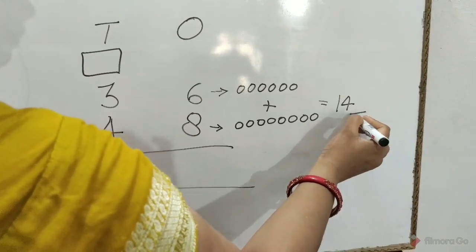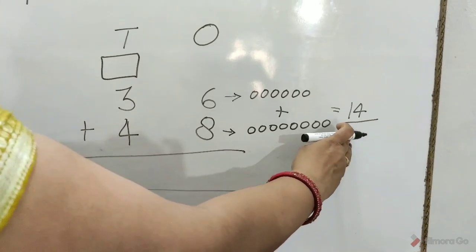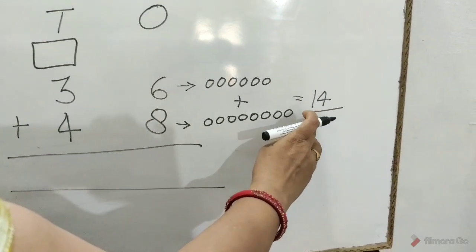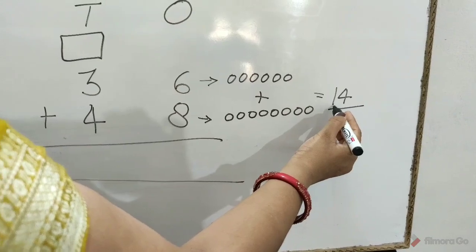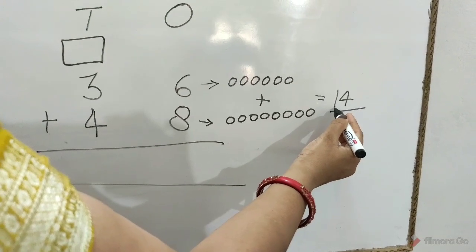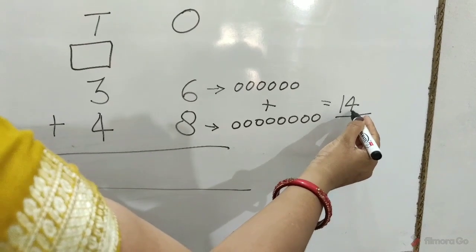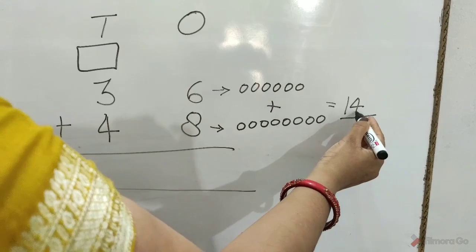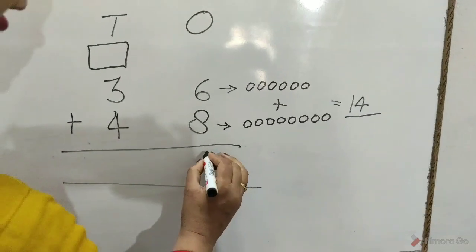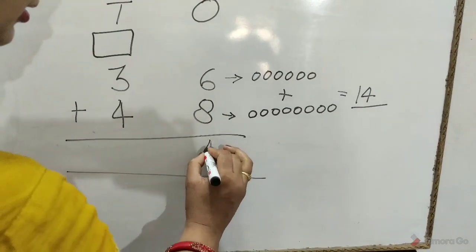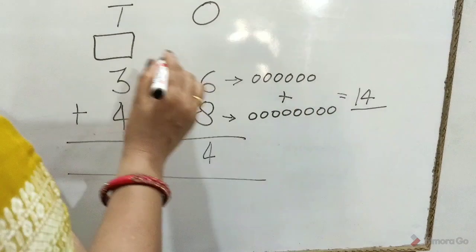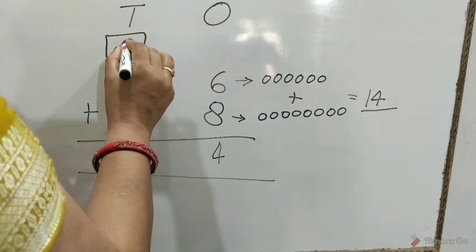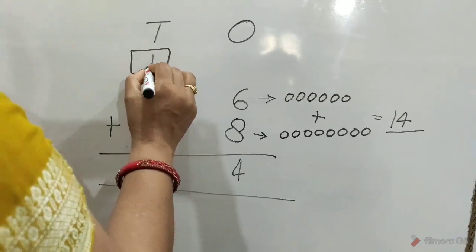Now we regroup 14: 1 ten as 10 ones and 4 ones. We write 4 under ones and 1 ten goes to carryover at the tens place.